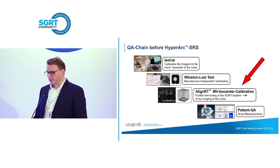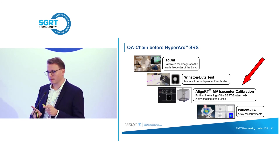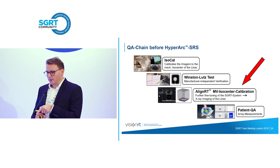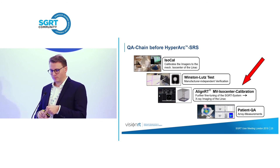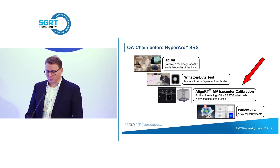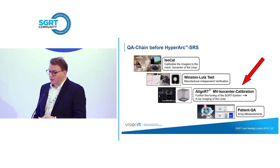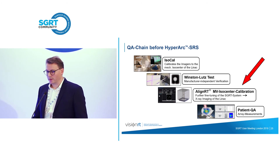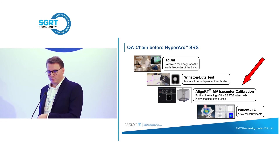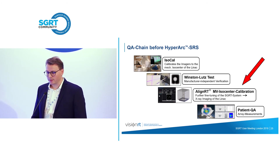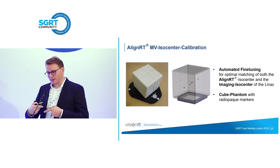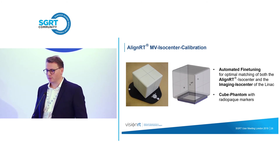What is the MV isocenter calibration? It is a tool that allows automated fine tuning to achieve optimal matching between the isocenter that AlignRT is calibrated on and the imaging isocenter of the LINAC — which should correspond to the mechanical isocenter. We use a cube phantom with radio-opaque markers as the connecting link between the two systems: radiographic imaging evaluates marker positions from different perspectives while the SGRT system sees the surface. Because the characteristics are in a fixed relationship, you can match the two systems — calibrating AlignRT onto the imaging system.